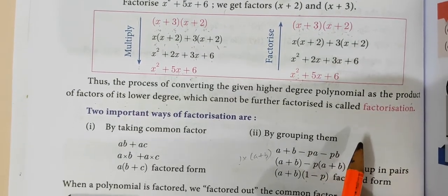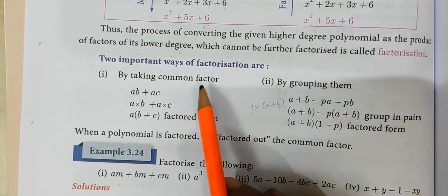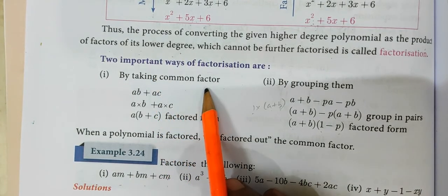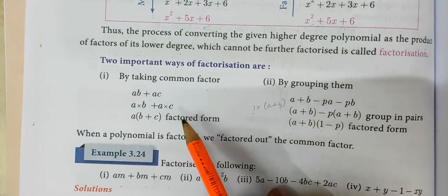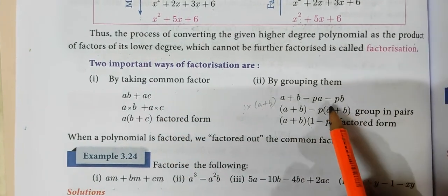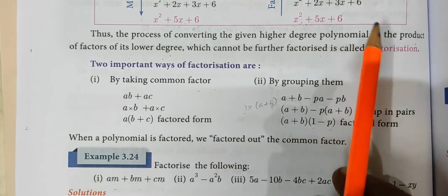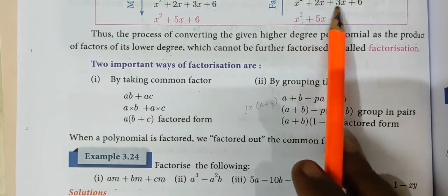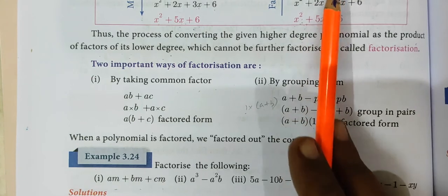In this example, factorization is done using two methods. One is taking the common factor directly — it is easier. Another one is grouping them. We split the terms and group them to form the factors.